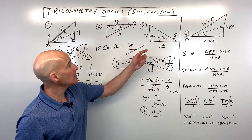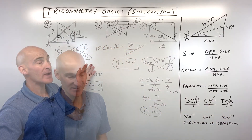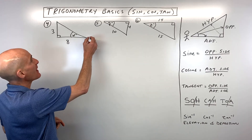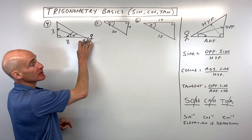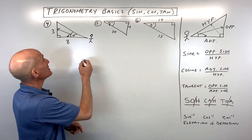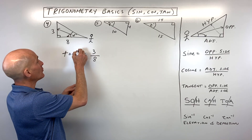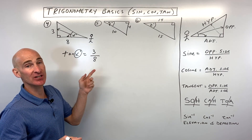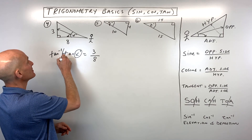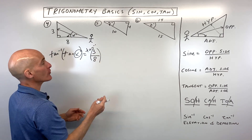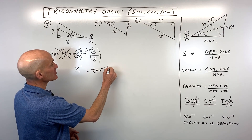Now let's talk about how to solve for a missing angle when you know the side lengths — that's where sine inverse, cosine inverse, and tangent inverse come in. For number four, we're looking for the missing angle x. Position yourself at the angle and ask what trig ratio ties together the opposite side and the adjacent side — opposite and adjacent is TOA, so tangent. The tangent of x degrees equals the opposite side three divided by the adjacent side eight. To isolate x, we take the tangent inverse of both sides, since inverses undo one another. So x equals the tangent inverse of three over eight.